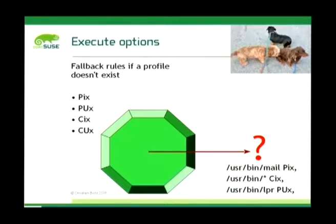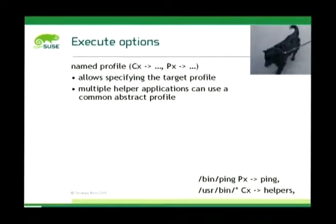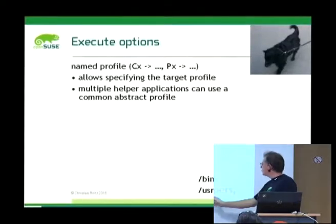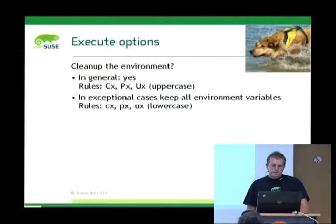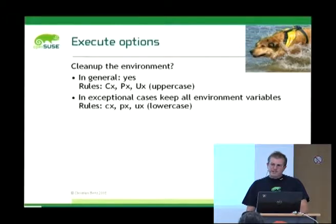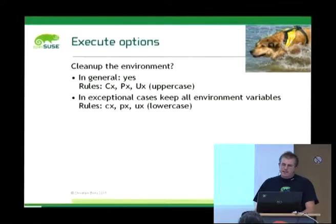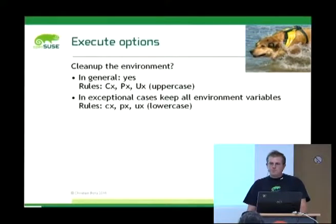You always have some examples in the bottom right. You can also name the execute target — use a helper for some binaries without duplicating it. The syntax is the binary you want to execute, the execute mode px, and then use the named profile, e.g. ping. You can also use wildcards, like /usr/bin/* should use the child profile helpers. aa-genprof and aa-logprof will always ask if you want to clean up environment variables — in general yes, because you do not want things like LD_PRELOAD in your environment when executing something else.